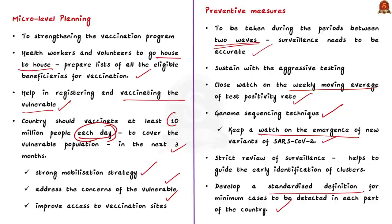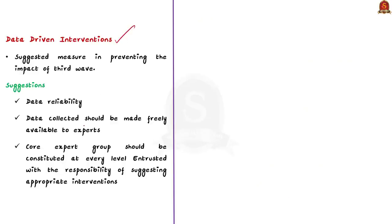In addition to the preventive techniques, the author also suggests data-driven interventions to prevent the impact of third wave. Now, let us discuss about these data-driven interventions. Firstly, the author demands transparency in data to ensure the reliability of it. Inaccurate data or suppressed figures would lead to formulation of wrong policies and programs. Secondly, the data collected should be made freely available to experts. Thirdly, a core expert group should be constituted at every level. This core expert group should be entrusted with the responsibility of suggesting appropriate interventions to the concerned authorities by using the provided data. All these steps will lead to data-driven governance.